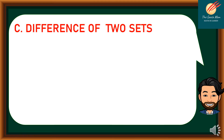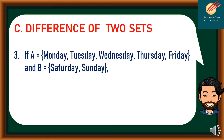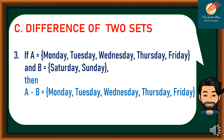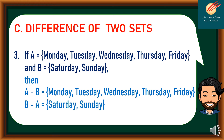Third example: if A is equal to {Monday, Tuesday, Wednesday, Thursday, Friday} and B is equal to {Saturday, Sunday}. A minus B is equal to Monday, Tuesday, Wednesday, Thursday, and Friday. On the other hand, B minus A — elements in B but not in A — we have Saturday and Sunday.